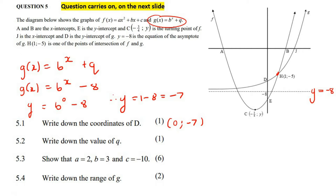Write down the value of q. We were supposed to be able to get 5.1 without knowing q, but I wouldn't worry too much about that. The value of q is minus 8.